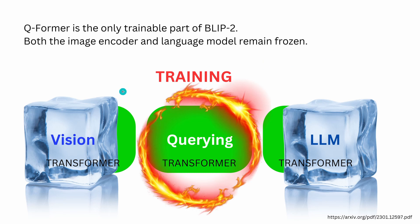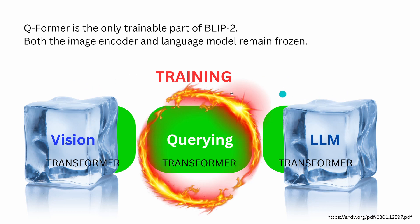If you look at the solution, you see that we use three Transformers. We have a Vision Transformer, we have an LLM, and a Transformer architecture. In the middle, the combining element — the QFormer — is also a Transformer. So we have Transformer, Transformer, and Transformer. The easy thing is that we're going to freeze the Vision Transformer and the Language Transformer, and we have the ability to fine-tune each element individually.